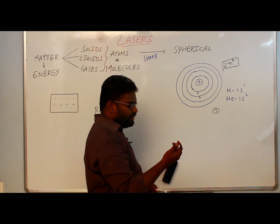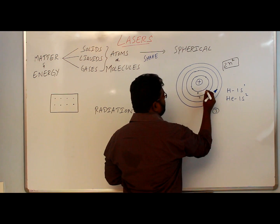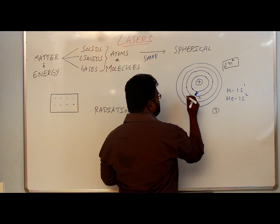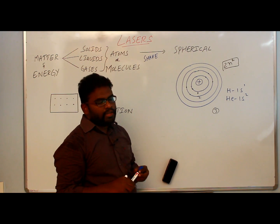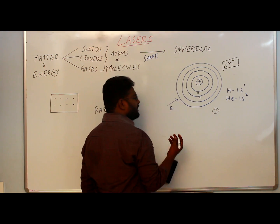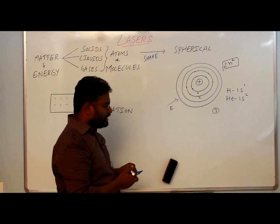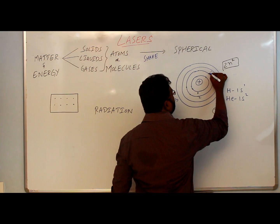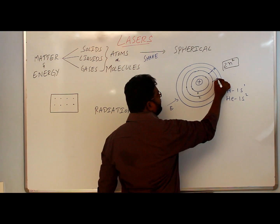Based on the availability of electrons, we fill the electrons in the orbits. As long as the electrons are in these orbits, they are said to be in the ground state. If we supply any kind of energy to the electrons — electrical energy or thermal energy — the electrons will absorb the energy and go to the next level, to an excited level.